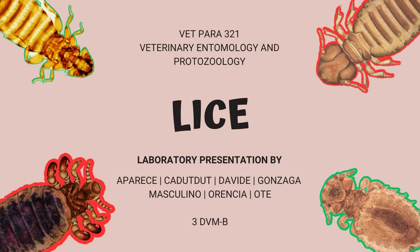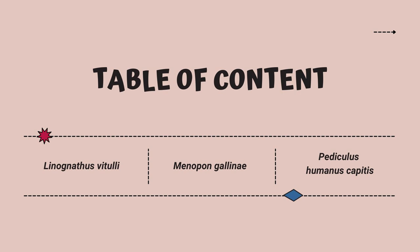Good day everyone! This is our laboratory presentation about lice for our veterinary entomology and protozoology. Lice are one of the most common ectoparasites that affect both humans and animals. They are obligate blood feeders and are highly host-specific, meaning that each animal species has one or more unique lice species that affect them. In this video, we will showcase three different lice species, where they parasitize, their morphology, and their life cycles.